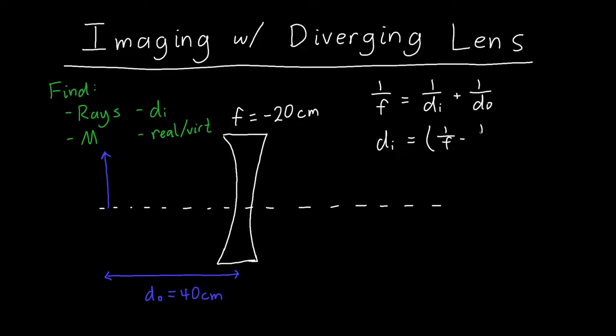We know f is negative 20 centimeters, we know do is 40. If we plug those in: 1 over negative 20 centimeters minus 1 over 40 centimeters, all inverted. Because these are both negative they'll add together in their magnitudes.